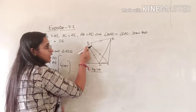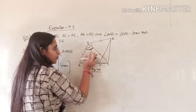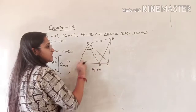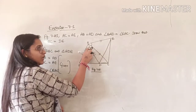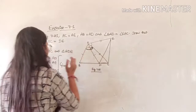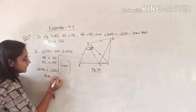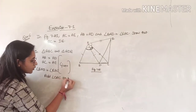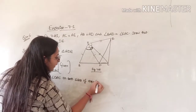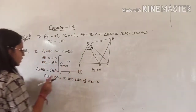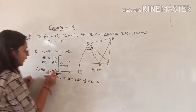The given information is angle BAD is equal to angle EAC. But I need the complete included angle BAC for triangle ABC, which is the angle between the two sides AB and AC. So I need to add the middle angle DAC into angle BAD. I will add angle DAC on both sides of equation one.